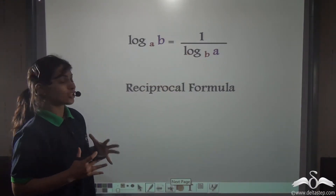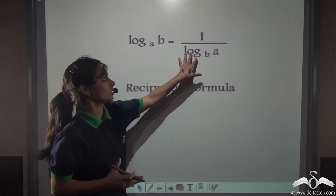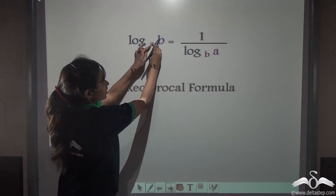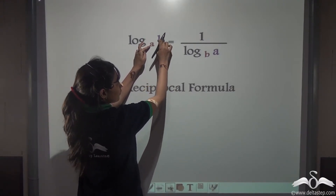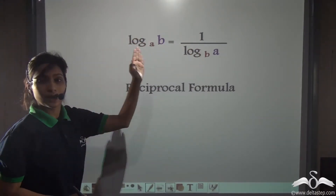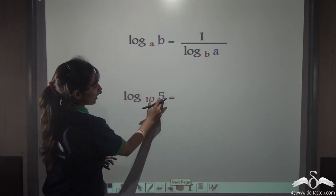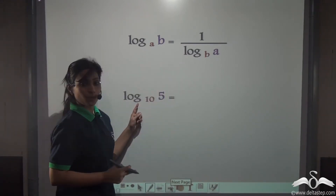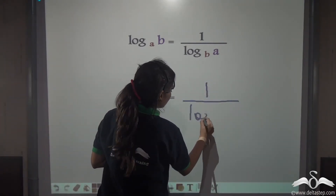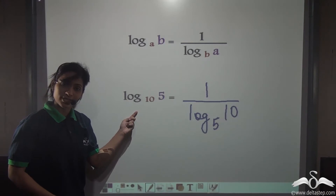Where can you use it? Whenever you are doing sums and you are given such logs in the denominator — things don't look good in the denominator; they look good in the numerator. So, if you want to bring it up to the numerator, you can just interchange the places of the base and the number and move it to the numerator. For example, log 5 to the base 10, using the reciprocal formula, becomes 1 by log 10 to the base 5. This is how we use the reciprocal formula.